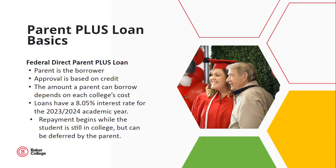The Parent PLUS Loan is a loan that the parent, not the student, is responsible for repaying. The PLUS Loan is credit-based, but parents are typically only denied if they have poor credit history. Income and debt are not in consideration in the PLUS Loan approval process. The amount the parent can borrow is dependent on the school's cost of attendance and other aid the student has received. Repayment of the Parent PLUS Loan does begin while the student is in college, but the parent could defer these payments until graduation or until the student stops attending at least half-time.